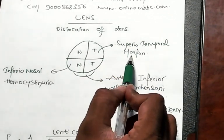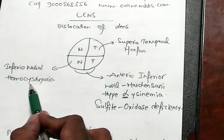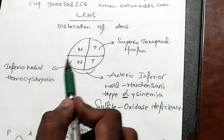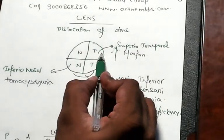Superior temporal is Marfan. Inferior nasal displacement is homocysteinuria. Marfan, he is very tall, so that is the reason you should remember that he is in the upper quadrant, superior quadrant and temporal.